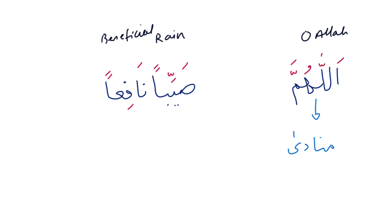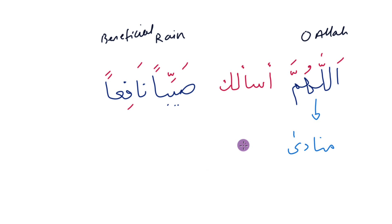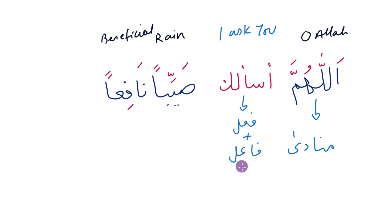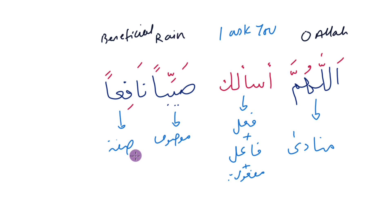اللهم is the مُنَادَى. The missing word we choose to insert is أسألُكَ, meaning 'I ask you.' In terms of تركيب, أسألُ is the فعل plus the فاعل, and the كَ is the first مفعول به. صيبٌ is the موصوف and نافعٌ is the صفة — موصوف plus صفة together become the second مفعول به.